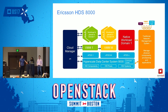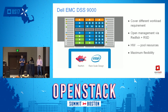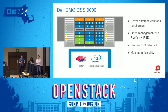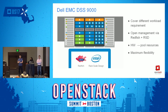Ericsson is a good implementation. Another example is the Dell EMC DSS 9000. From the picture, you can see it covers different workload requirements — from low, medium, to high workload. It opens management via Redfish and RSD. It appears to have made the hardware available as pooled resources to users. This is a production implementation that shows maximum flexibility in hardware resource support.